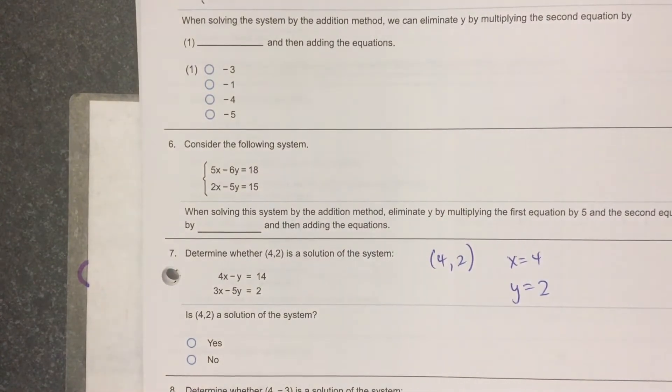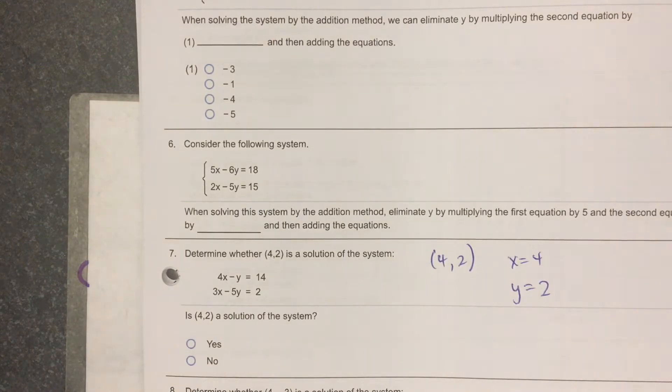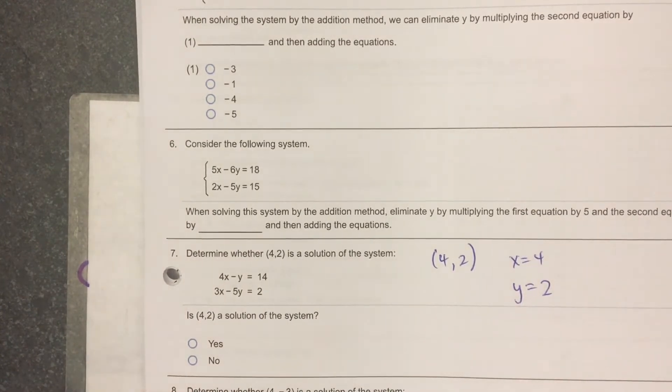They want to know if this set of numbers works in both equations. When we say works in both equations, do I get a true statement? Does it satisfy this system? That's one of the drop-down questions in 7.1. Well, the only way to check it out is to plug it in and see if it works.